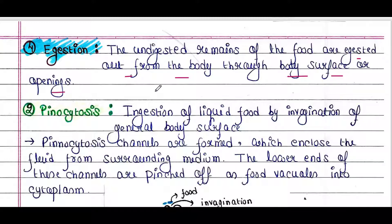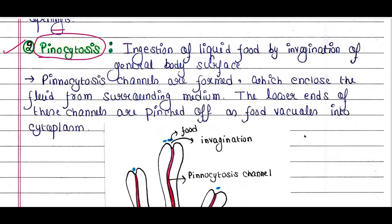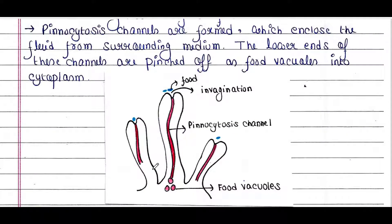Next process is pinocytosis, which is similar to zootrophic nutrition. The difference is that in this process the cells ingest liquid food instead of solid food. Here we can see the cell of the protozoa with the liquid food present, and the cellular surface is getting invaginated.